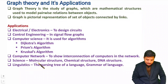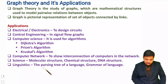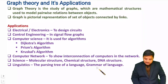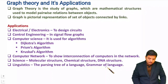In science, graph theory is used to study molecular structure, chemical structure, and DNA structure. In linguistics, the parsing tree of a language can be studied using graph theory, and grammar is also based on graph theory — statements must follow well-defined trees, and if not, a computer identifies a grammatical error, such as the green underline you see in Word.